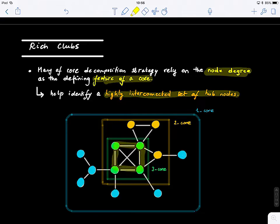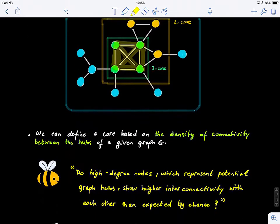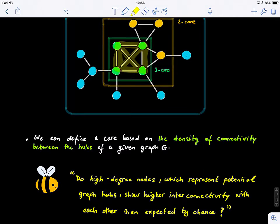Now we can define a core also based on the density of connectivity between the hubs of a given graph. There are different ways. At this stage we only looked at degree, but you can ask yourself, why do they only use degree? Why not use other measures? You always need to engage in thinking and ask, now I know what a core is, but can I define it in a better way? Or maybe can I integrate other measures to define a core? How can I modify the definition of a core in such a way that I can solve my problem in a better way?